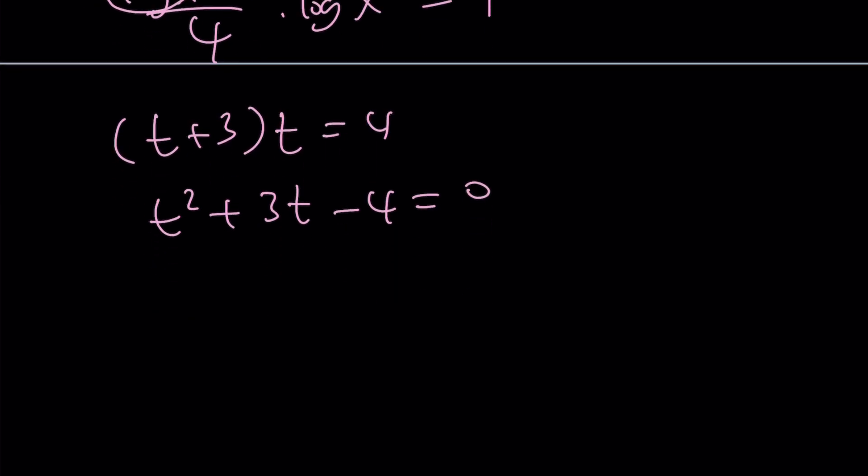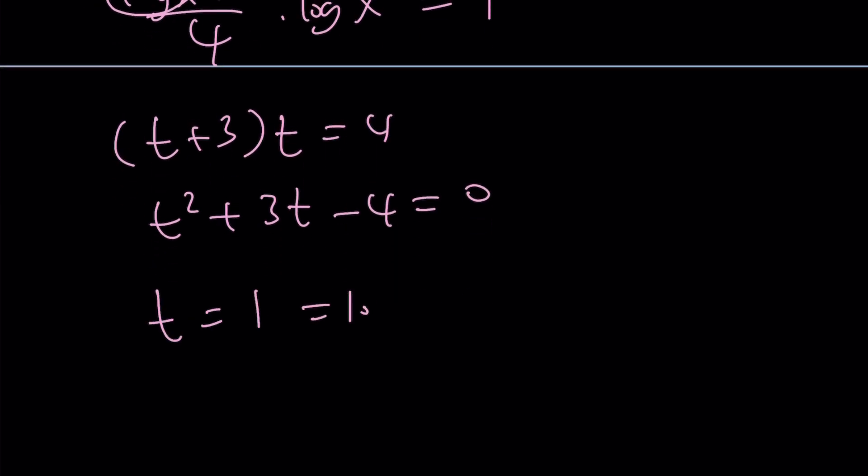From here you get log x values. T equals 1, which is log x, which means x equals 10. Or t equals negative 4, which is log x. This means x equals 1 over 10,000.